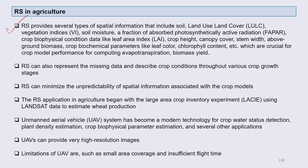Remote sensing provides several types of special information we have already discussed, like information about soil, land use, land cover, vegetation index, soil moisture, and the fraction of absorbed photosynthetically active radiation — called FAPAR. It also provides crop biophysical condition data like leaf area index, crop height, canopy cover, stem width, above-ground biomass, and crop biochemical parameters like leaf colour and chlorophyll content — various aspects crucial for crop model performance, computing evapotranspiration, and biomass yield.